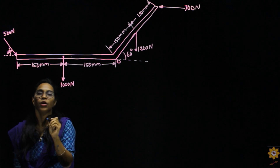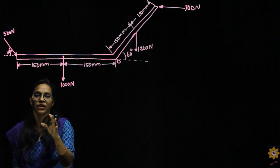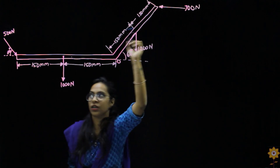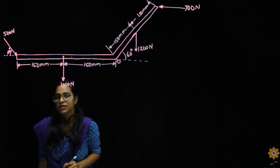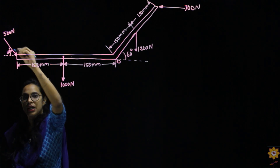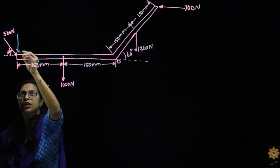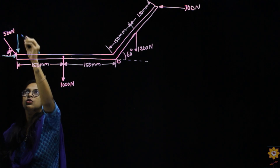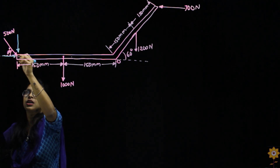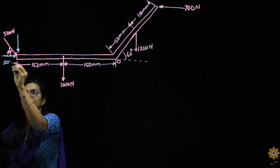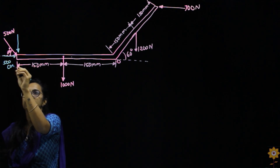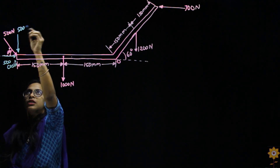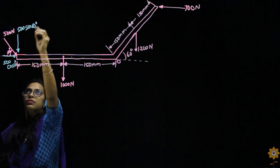First, we check if all the forces are resolved. This force is in the vertical direction and this one is horizontal, but this force is at an angle of 60 degrees, so we need to resolve it. Since it's an inward force, we resolve it in the inward direction. The component adjacent to the angle is 500 cos 60 degrees, and the opposite component is 500 sin 60 degrees.